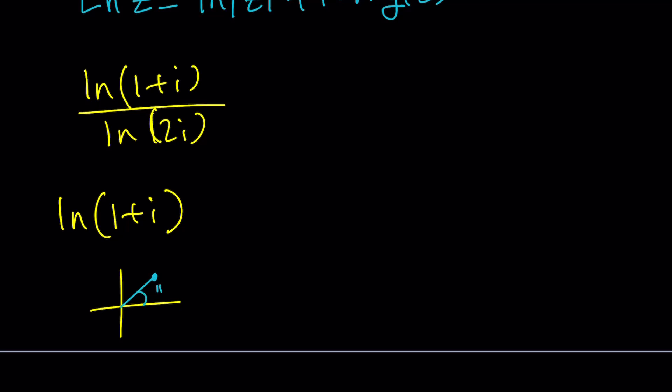And its modulus, the absolute value is going to be square root of 2 from Pythagorean theorem. Make sense? So we can write this as ln square root of 2 plus i times the argument, the main one, the principal one, is pi over 4 plus 2 pi n. So that's basically going to be the logarithm of 1 plus i. This is multi-valued because n is an integer. Make sense?